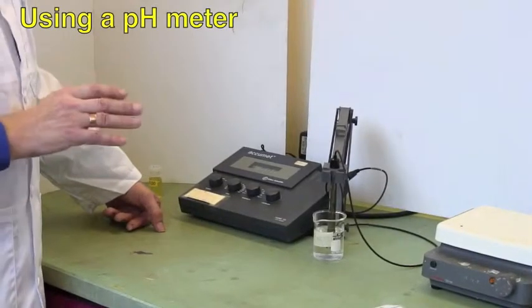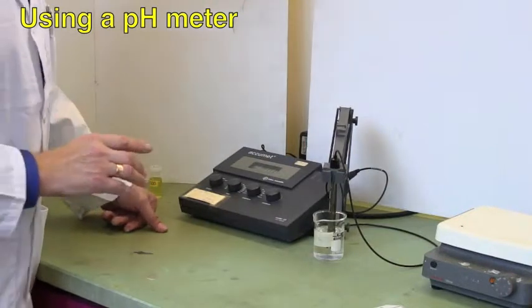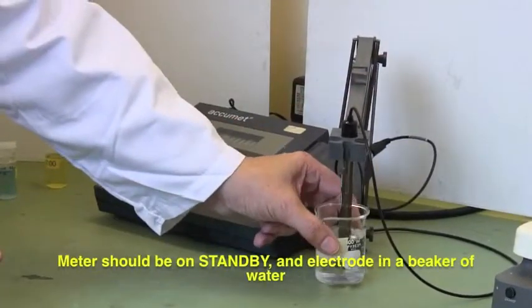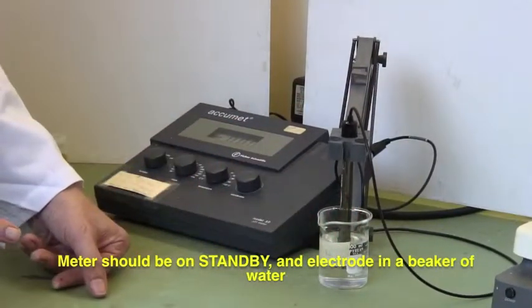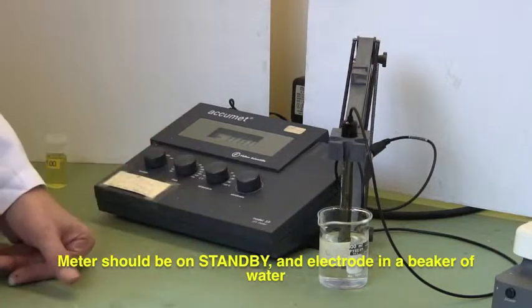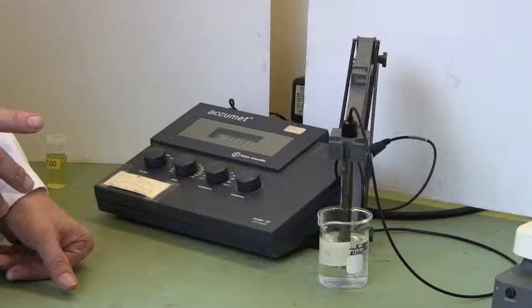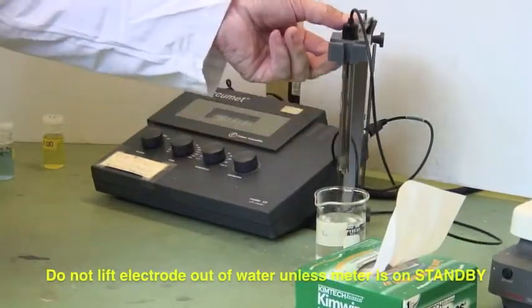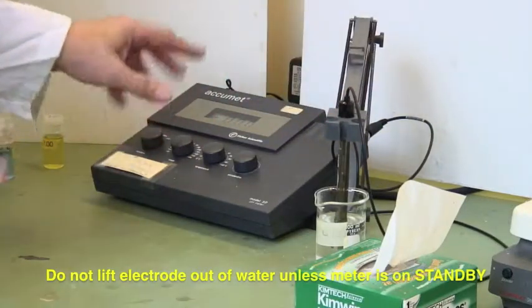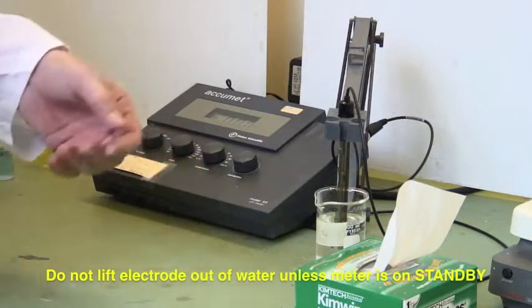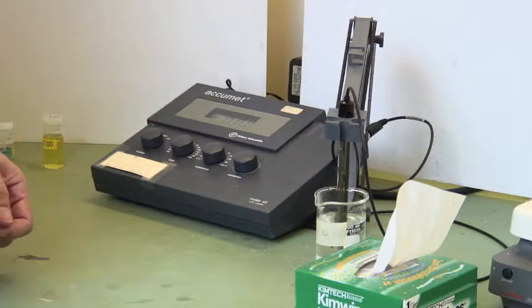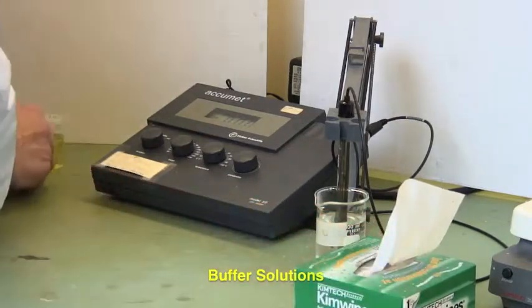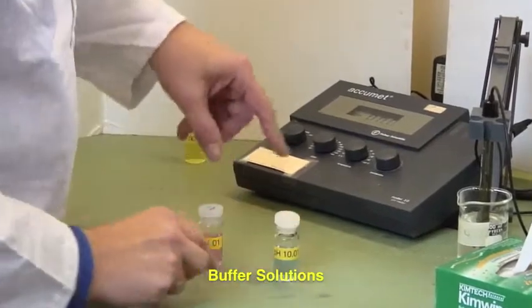This is a pH meter and how to use it. At the moment, it's set on standby, meaning it's shorted out. The electrode has been sitting in distilled water since last use. Don't lift the electrode out of liquid unless it's on standby, or you'll polarize it and get peculiar results. We'll calibrate the machine using buffer solutions.